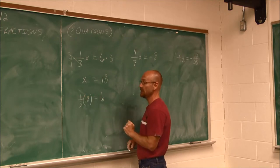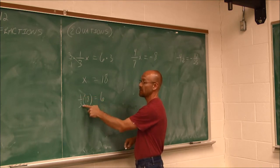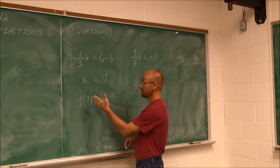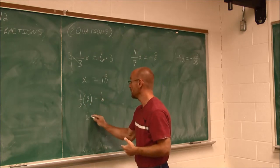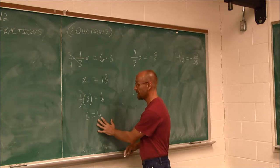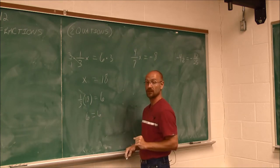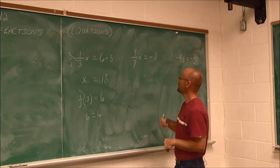1/3 of 18 is the same thing as 18 divided by 3, which is 6. 6 equals 6. That's a true statement. 6 equals 6. It does not get any more true than that right there.